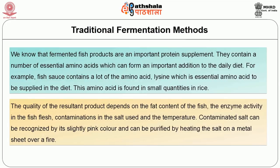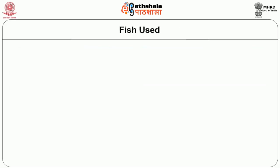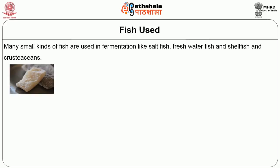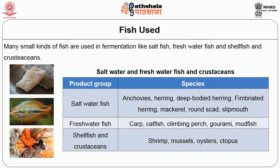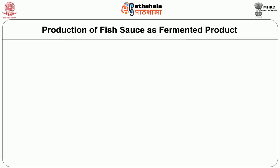Many kinds of small fish are used in fermentation, like saltfish, freshwater fish, shellfish and crustaceans. A table shows the different types of fishes used to give an idea about the fermentation of fish. Now let us look at how to produce fish sauce as a fermented product.